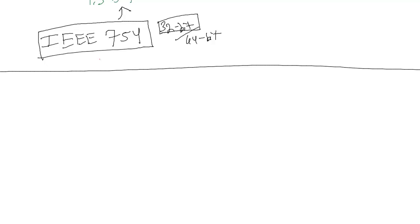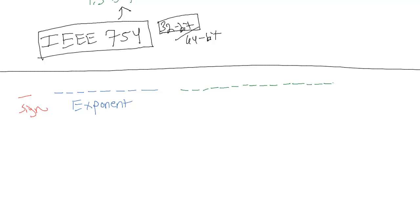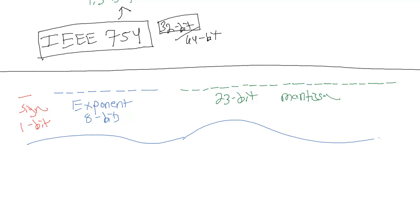Since it's a 32-bit number, we have 32 fields total. We have a sign field which is 1 bit, followed by an 8-bit exponent field, and finally a 23-bit mantissa field. So in total we have 32 bits.